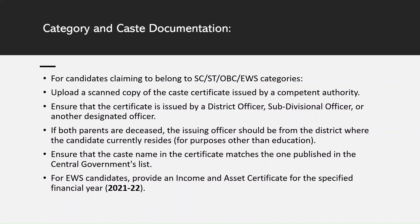For candidates who belong to SC, ST, OBC, or EWS categories, ensure that you upload the correct caste certificate from a designated authority as specified in the instruction manual. Ensure that the caste name in the certificate matches that of the one published in the central government's list. For EWS candidates, you need to provide an income and asset certificate for the financial year 2021 to 2022 by the closing date of the application. If you have already claimed the EWS status while filling up the application form, the date of issue of the EWS certificate must be before the closing date of the application, which was 11th of October 2022.